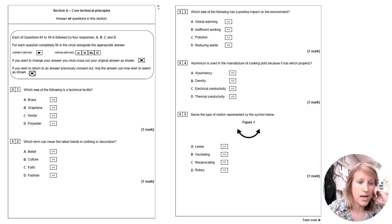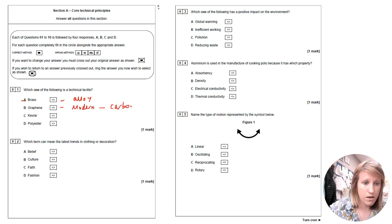Which one of the following is a technical textile? So brass is a metal, that's an alloy, so it's not that one. Graphene is what we would call a modern material and it's actually carbon, stuff like that. Kevlar is what you would class as a technical textile, so it's stuff that can be used in bulletproof vests and it has that woven kind of polymer fibres to it and it gives it a lot of strength. So that is a technical textile, whereas polyester is just a normal textile. So the correct answer for that one is Kevlar.